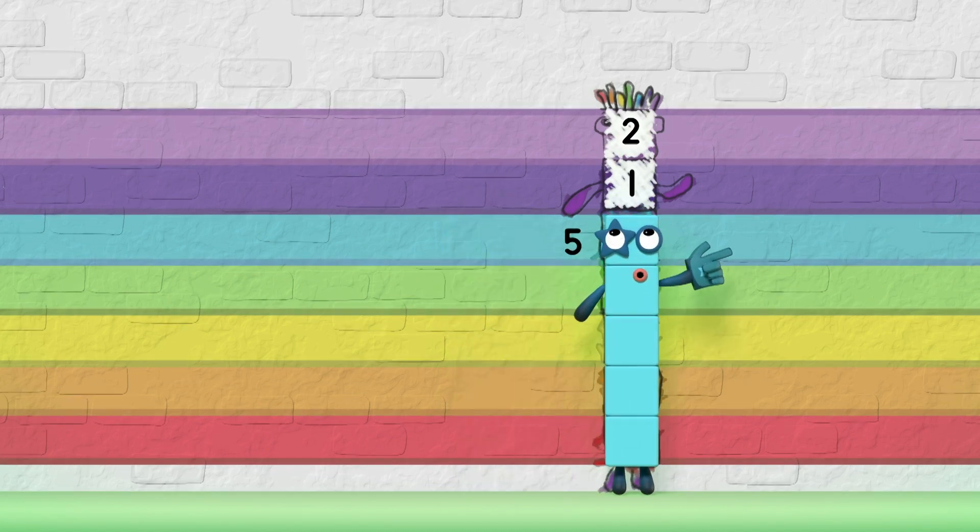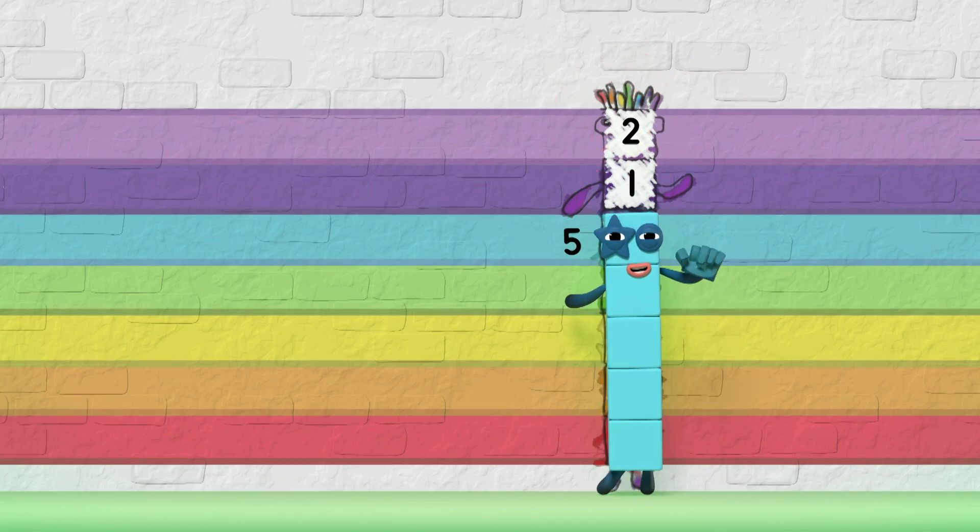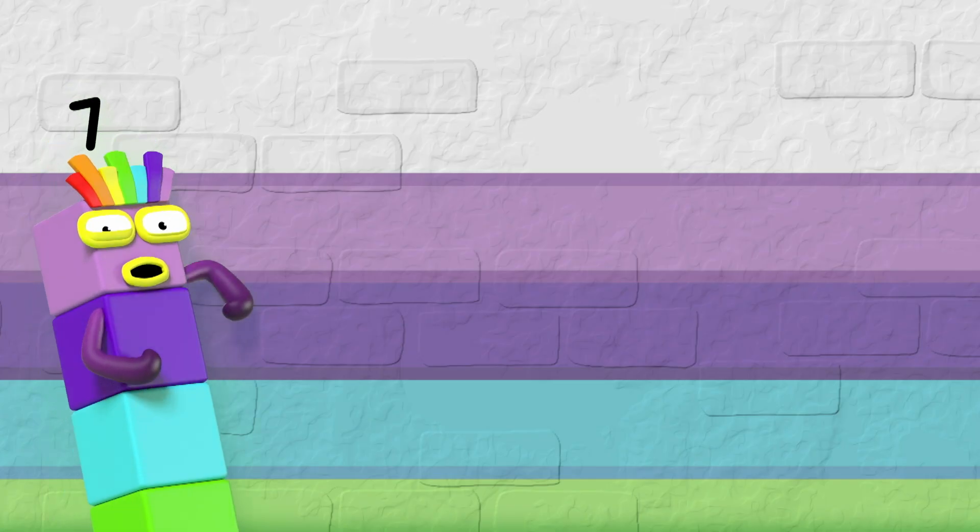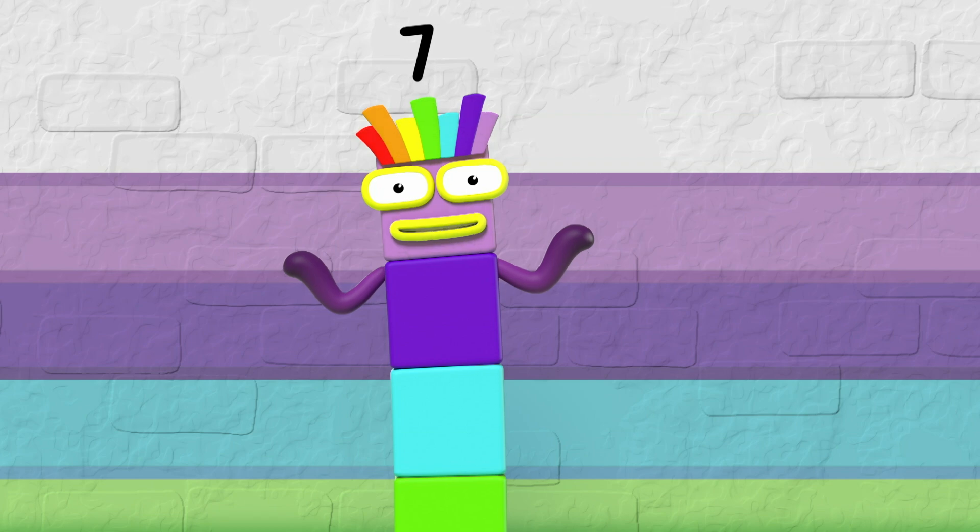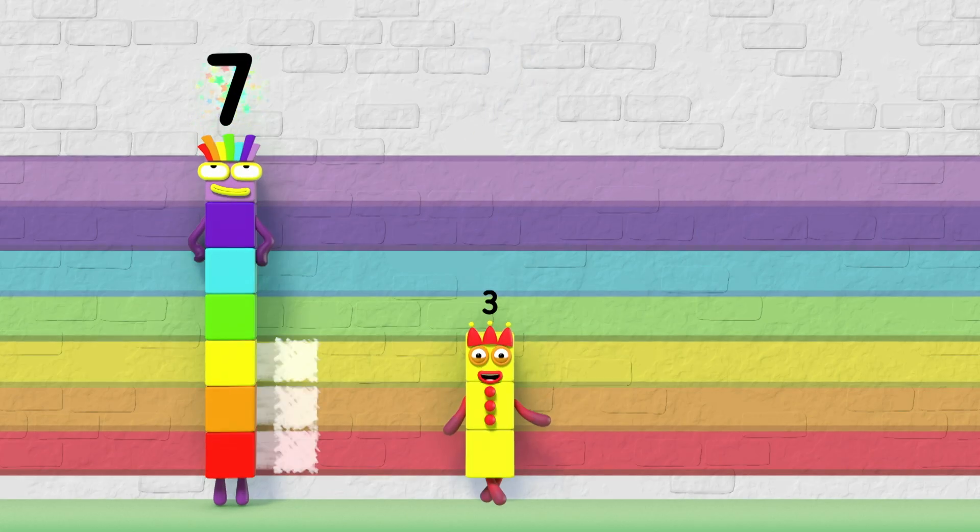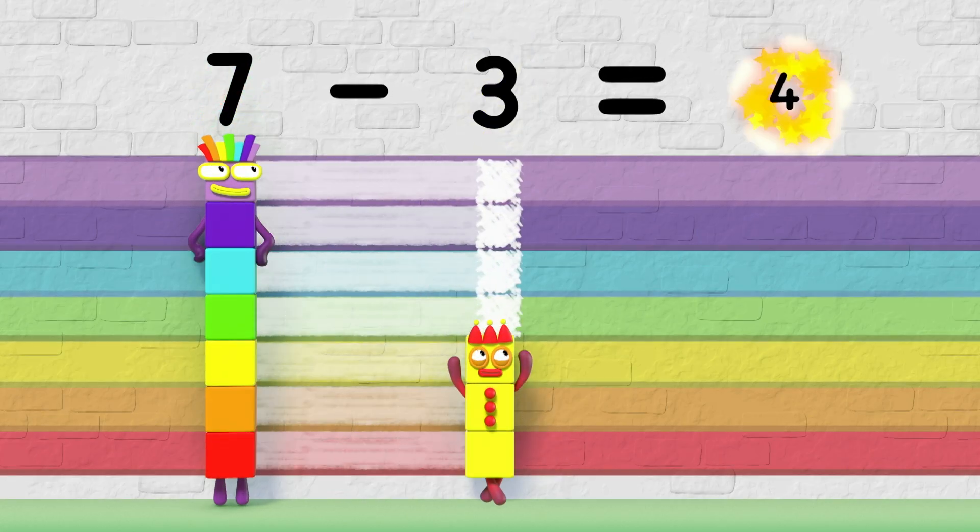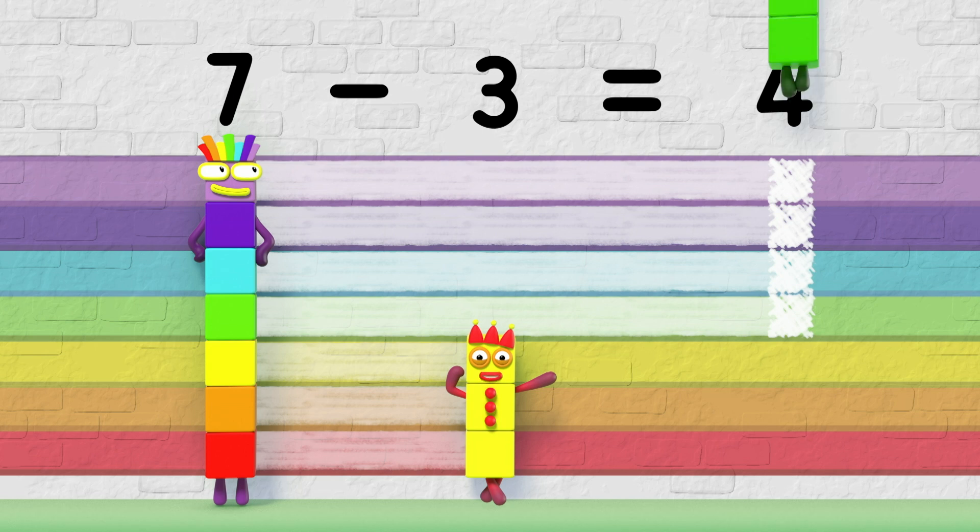One, two. The difference is two. So what's the difference? Seven minus three equals four. That's the difference. Four.